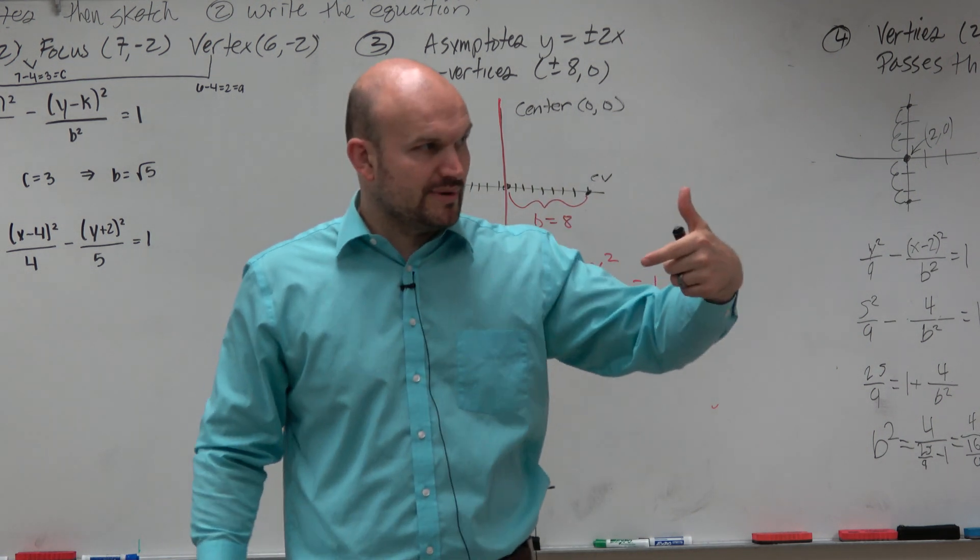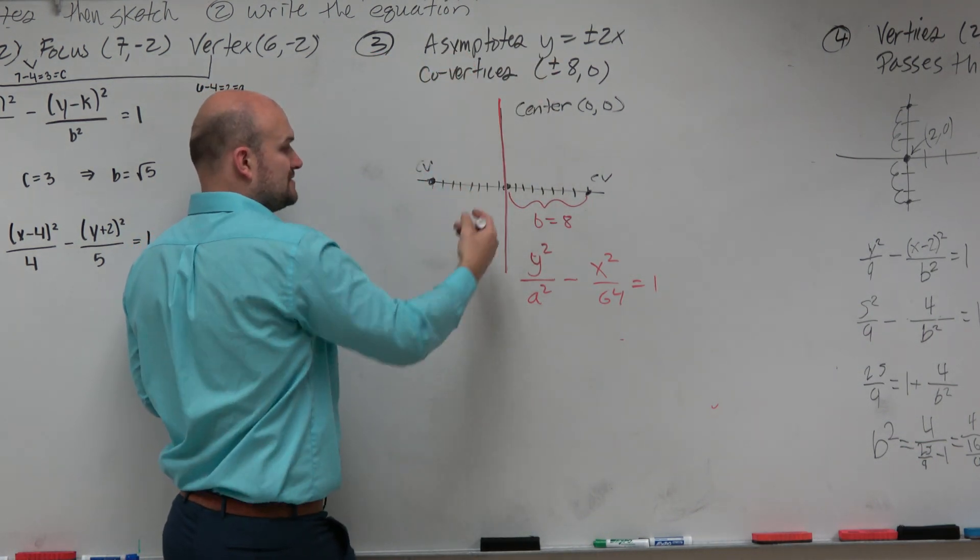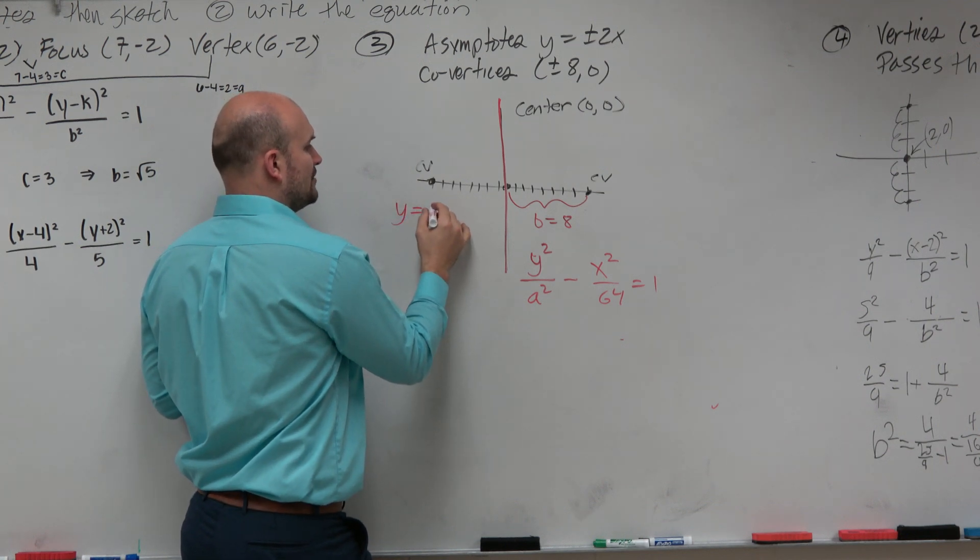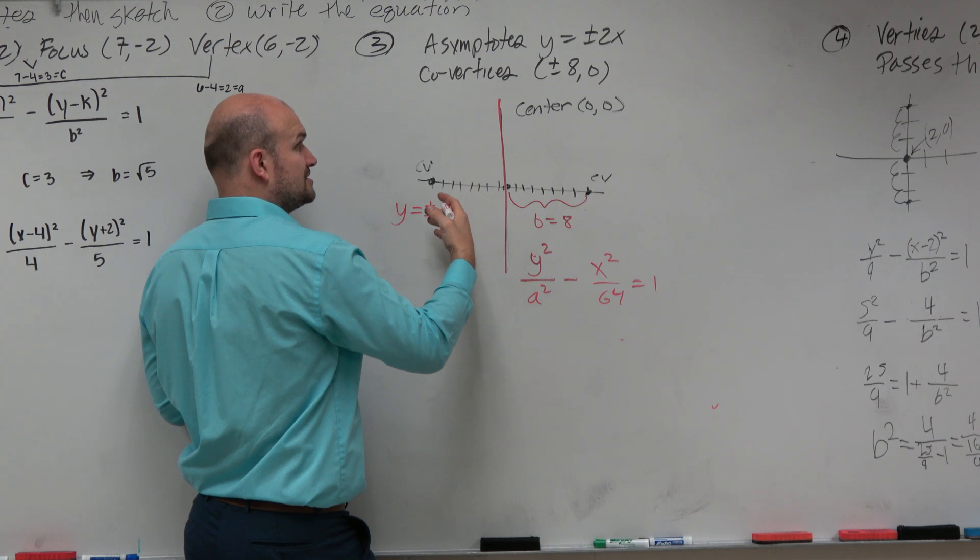So we look at what other piece of information we've been given. Well, we've been given the asymptote. Now, remember, for a vertical transverse axis, the asymptote is going to be plus or minus a over b.